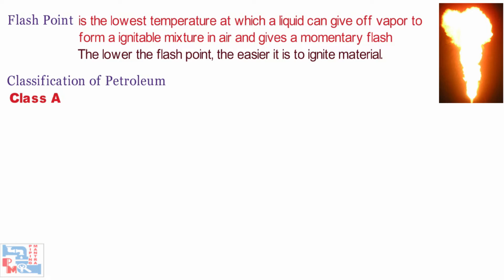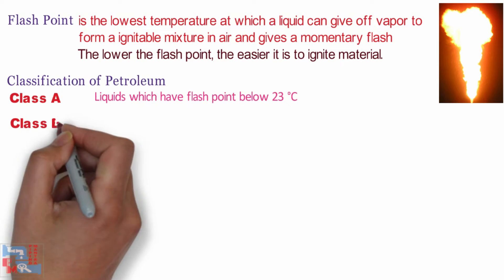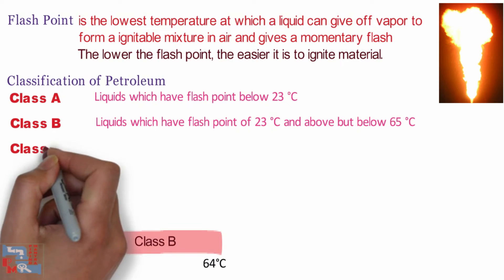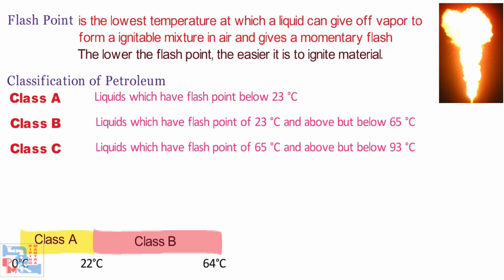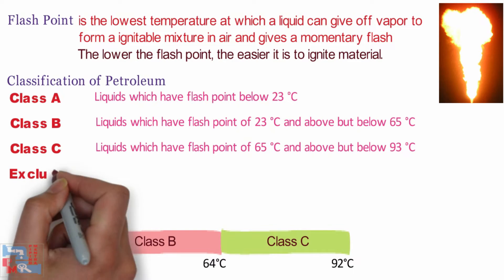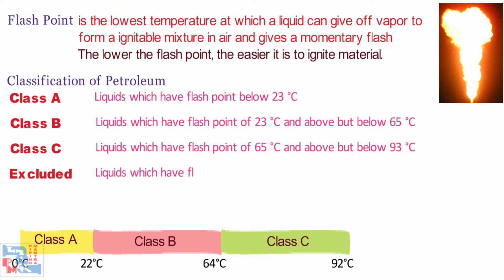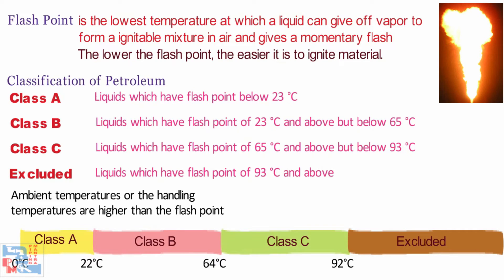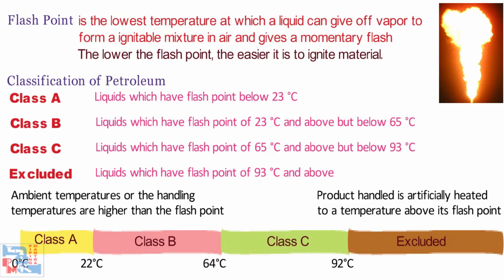Class A Petroleum are liquids which have flashpoints below 23 degrees Celsius. Class B Petroleum are liquids which have flashpoints between 23 and 65 degrees Celsius. Class C Petroleum are liquids which have flashpoints between 65 and 93 degrees Celsius. One thing to keep in mind is that this classification does not apply and special precautions should be taken where ambient or handling temperatures are higher than the flashpoint of the product, or where the product handled is artificially heated to a temperature above its flashpoint.